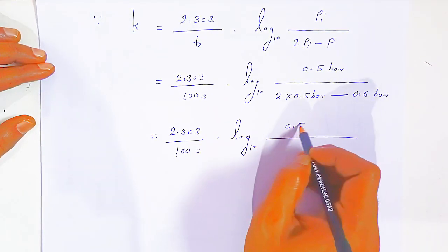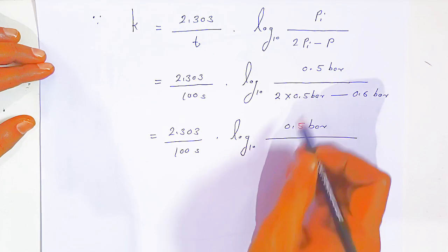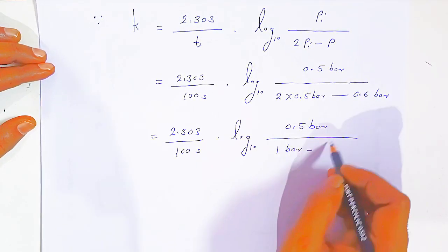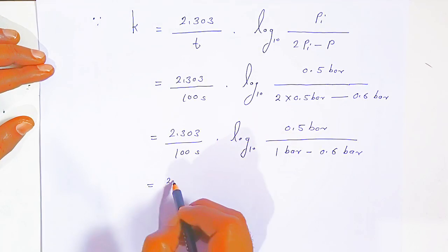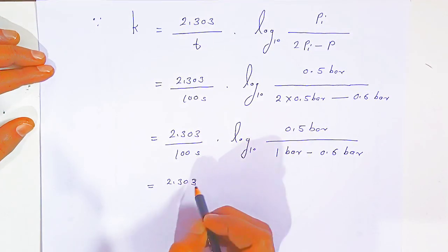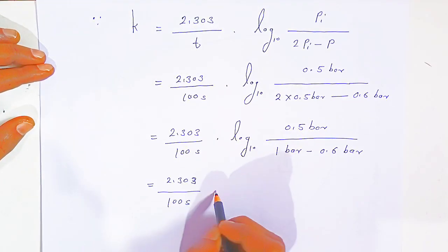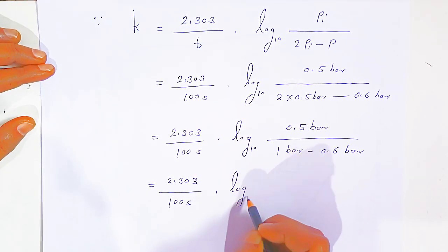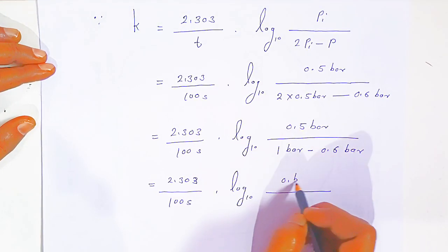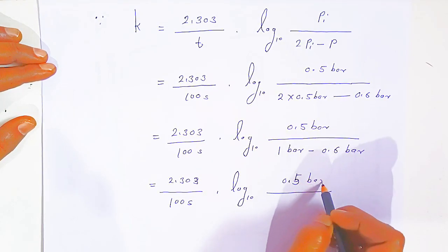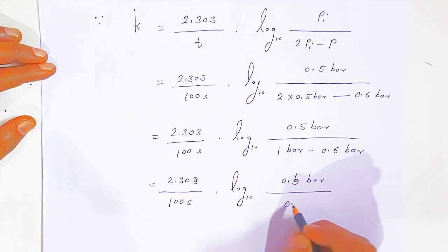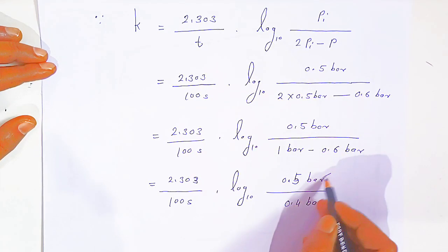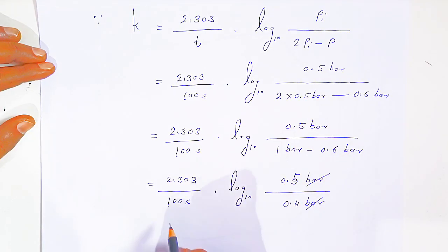So k = 2.303 / 100 seconds × log₁₀ of 0.5 bar divided by (1 bar − 0.6 bar). Here 2 × 0.5 bar = 1 bar, and 1 bar − 0.6 bar = 0.4 bar. The bar units cancel.